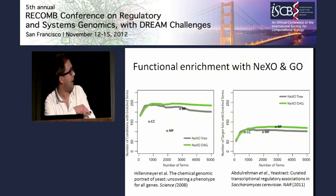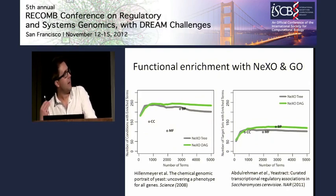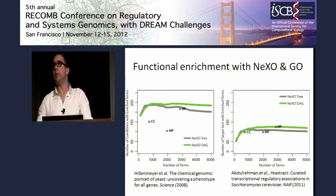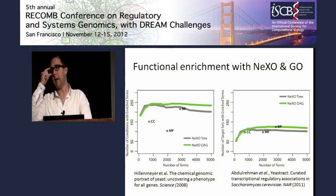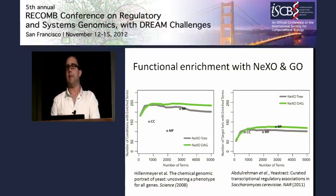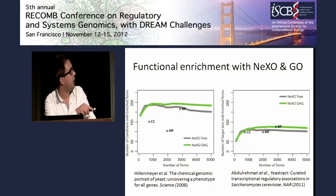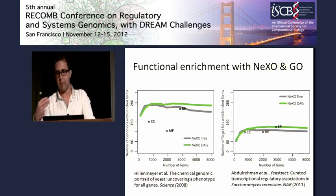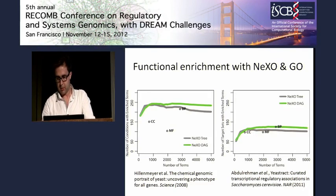We also asked how GO is most often used today — and it's most often used for functional enrichment, where you have a new high-throughput dataset and want to validate it. You can use GO for this, but you can also use our data-derived ontology, which has the advantage of including new components not yet in GO. We find that we can identify the same or more cases of enriched terms under different biological conditions — the power is the same or slightly better from the network-derived ontology compared to GO.